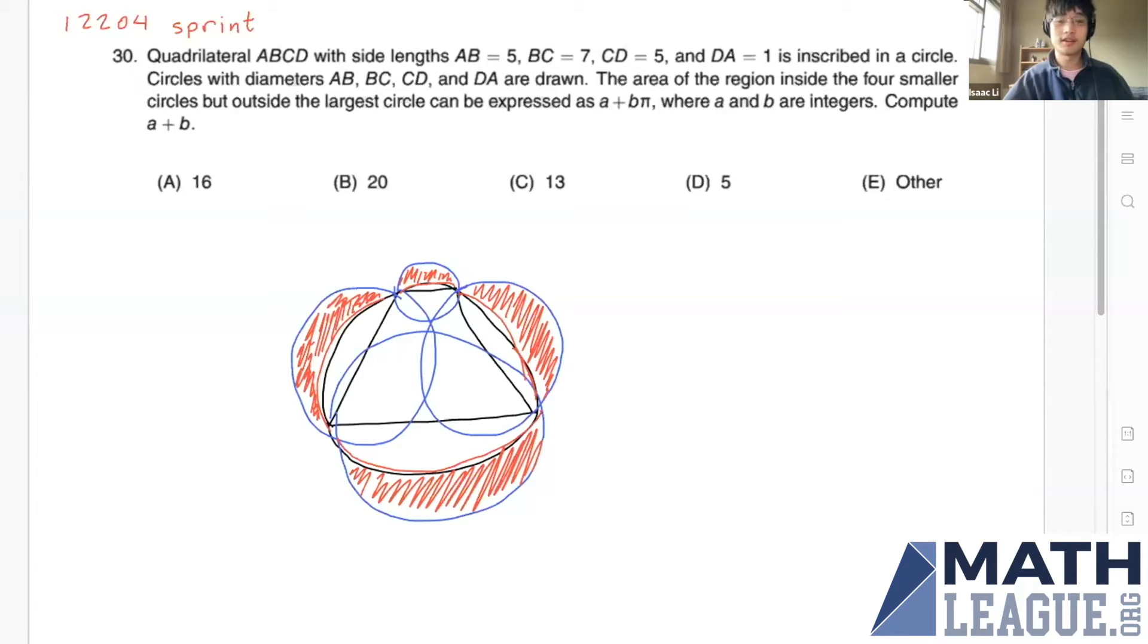So we're going to go over the last problem of Sprint, Sprint number 30. Quadrilateral ABCD with side lengths AB equals 5, BC equals 7, CD equals 5, and DA equals 1 is inscribed in a circle. Circles with diameters AB, BC, CD, and DA are drawn, and we want to find the area of the region that is inside the four smaller circles but outside the largest circle. As you can see, most of the smaller circles areas is inside the bigger circle, so we just want to find the total area of all of these lunes.